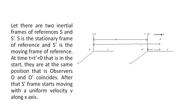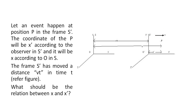So for example, suppose there are two inertial frames of reference S and S'. S is the stationary frame of reference and S' is the moving frame of reference. Now at time t equals t' equals 0, that is at the start, they are at the same position — observers O and O' coincide. After that, S' starts moving with a uniform velocity v along the x-axis.